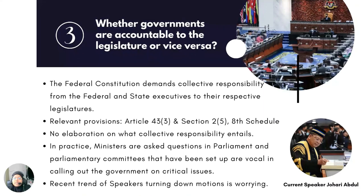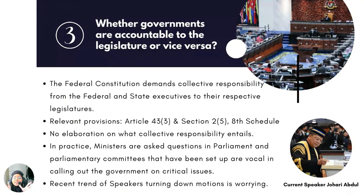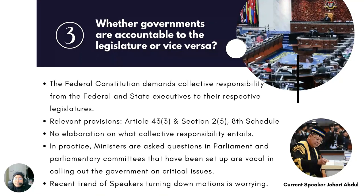The third question is whether governments are accountable to the legislature or vice versa. This is also quite clear in the constitution. Article 43, Clause 3 and Section 2, Subsection 5 of the 8th Schedule in particular, demands collective responsibility from the federal and state executives to their respective legislatures. However, there are no elaborations made on what this collective responsibility entails. In practice, ministers are asked questions in parliament and parliamentary committees set up for various matters have also been vocal in calling out the government on critical issues. However, there has been a recent and worrying trend of speakers turning down motions submitted by MPs, which can be a threat to constitutionalism, and if this trend persists, the government's accountability to the legislature may be significantly hindered.